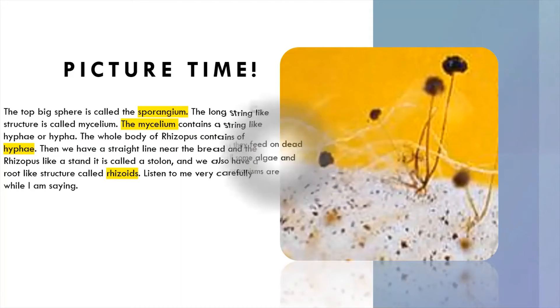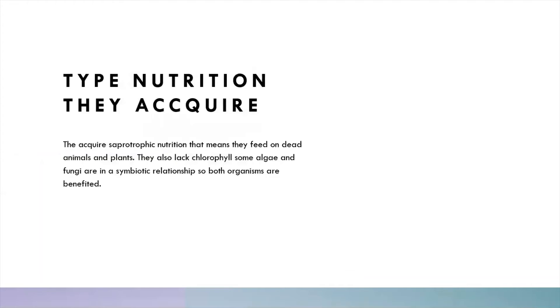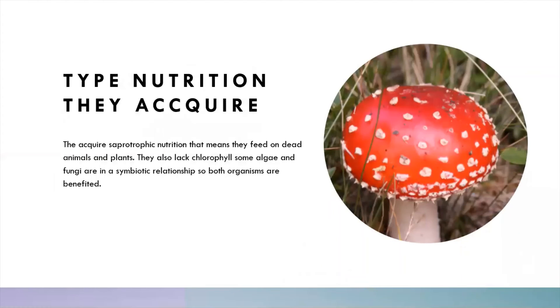What type of nutrition do they acquire? They acquire saprophytic nutrition, that means they feed on dead or decaying animals and plants. That's how they get their nutrition. They also lack chlorophyll, that means they don't have any chlorophyll.